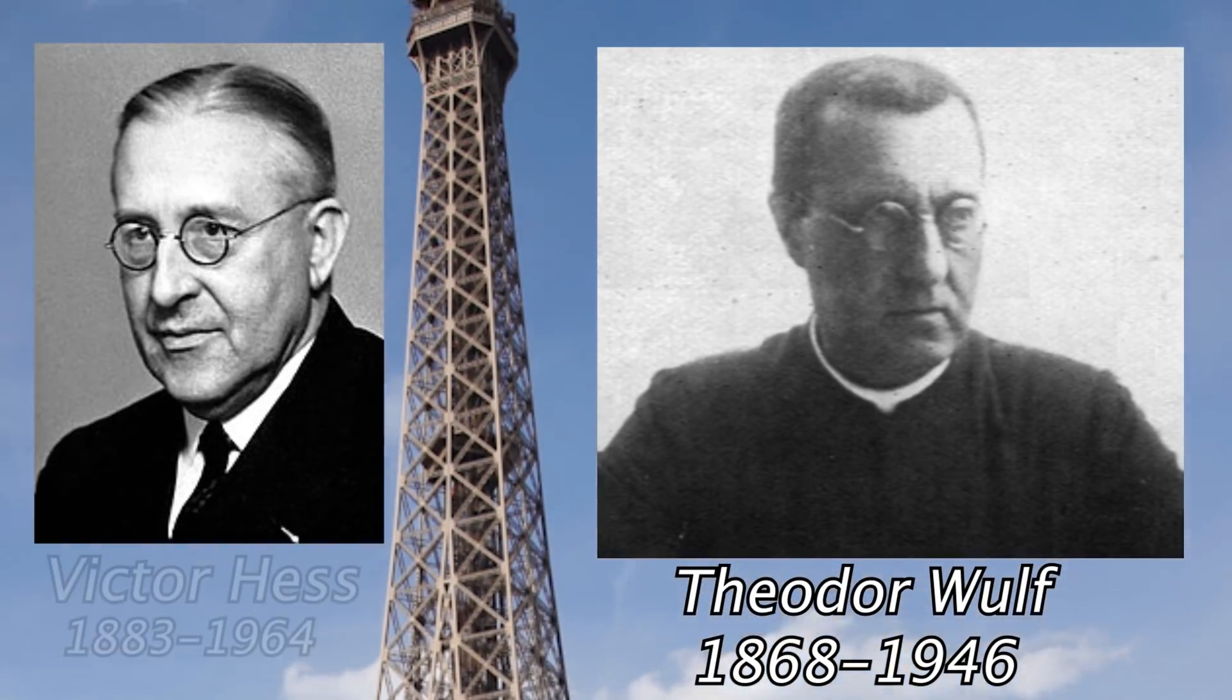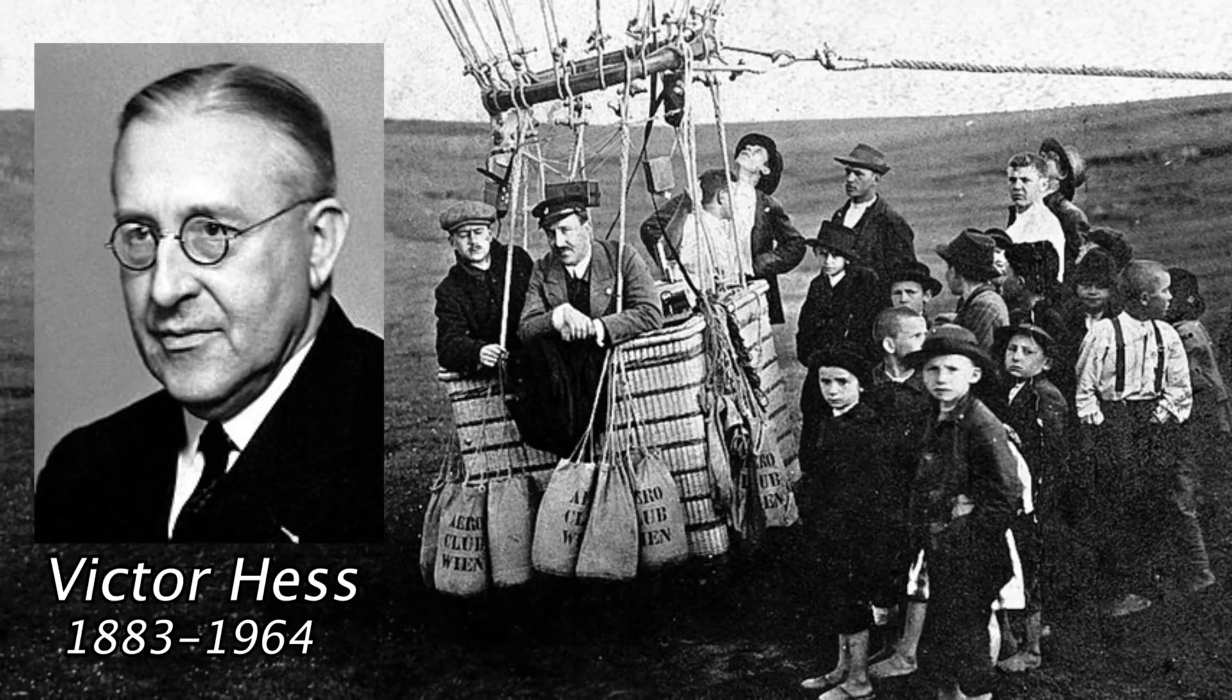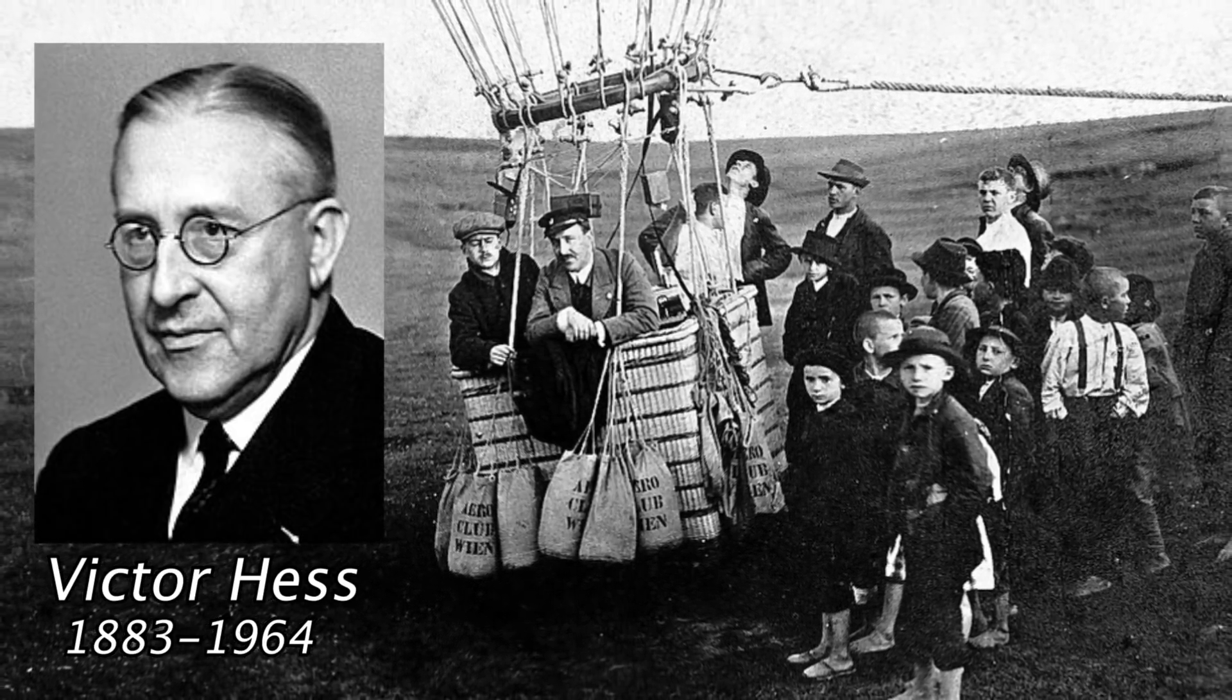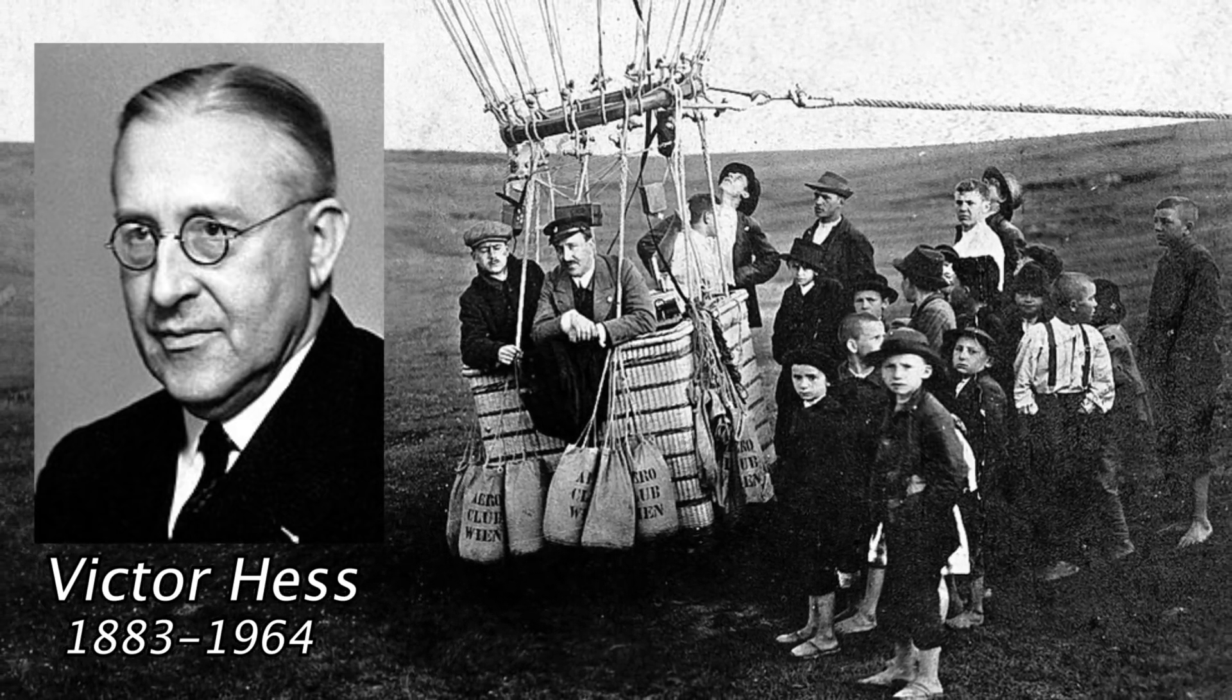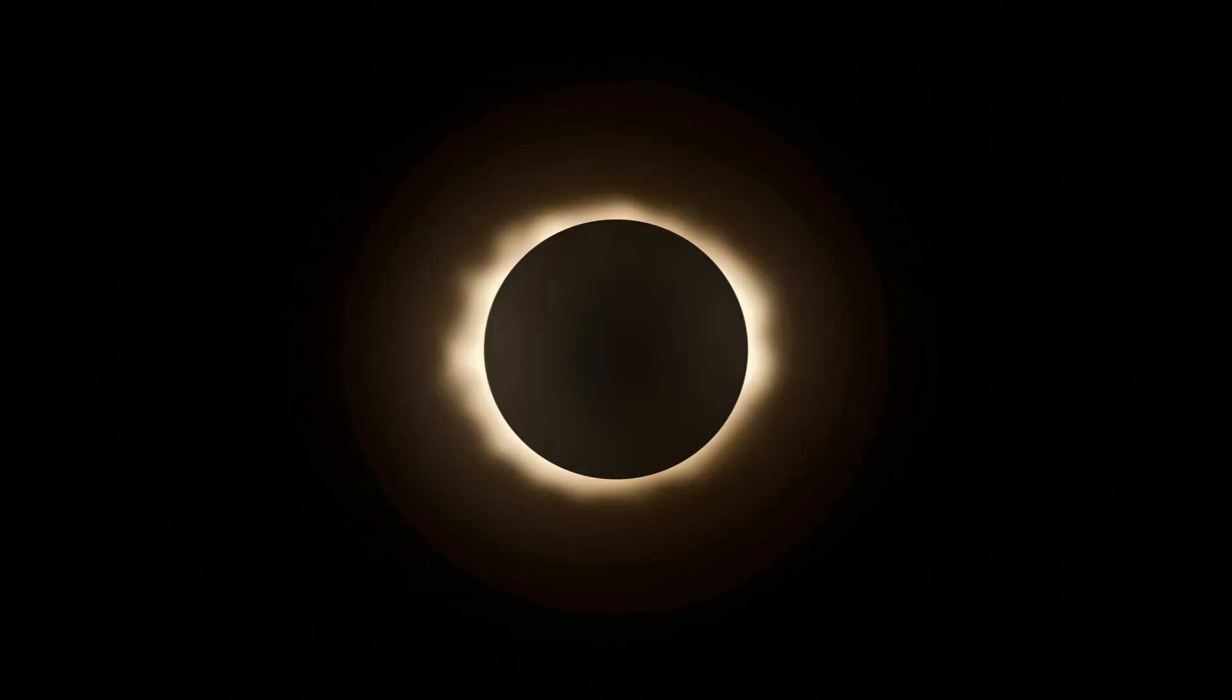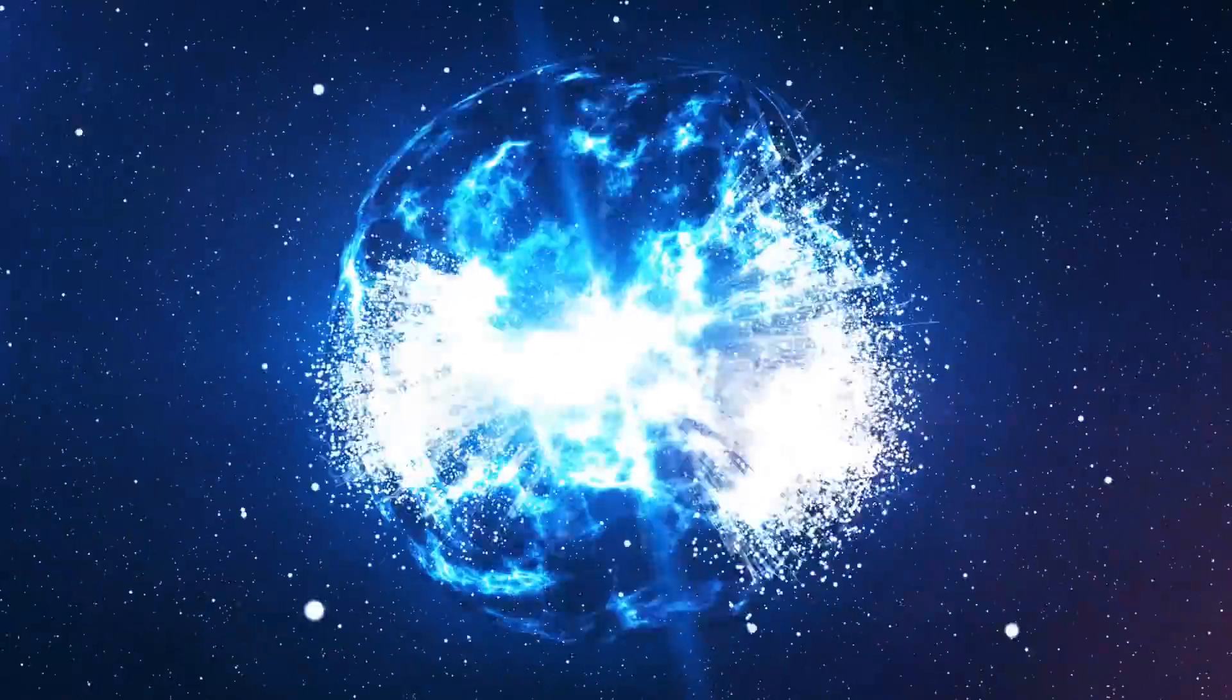And in 1912, Victor Hess carried an electroscope to an altitude of 5,300 meters in a balloon flight and again found a huge increase in the rate of ionization. From this finding, he concluded that this radiation was not coming from Earth, but instead from space. The sun being a source was ruled out when he made another balloon trip during a solar eclipse and still measured a rise in radiation. Therefore, it must be coming from somewhere else in space and this radiation became known as cosmic rays. A source of cosmic rays would be like a supernova or the explosion of a star ejecting most of its mass.